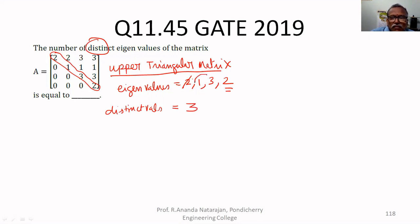Answer is 3. Only 3 values are distinct. If you write 4, answer wrong. Number of distinct eigenvalues are only 3, because 2 is repeating, therefore 3 is the answer.